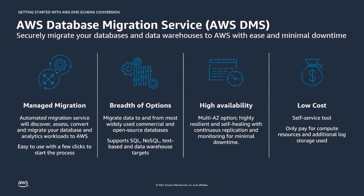DMS focuses on discovering and assessing a fleet of databases, and then subsequently converting and migrating them to AWS, all with minimal downtime and zero data loss. DMS supports a wide variety of sources, both relational and non-relational, and supports an even wider variety of targets. When you're migrating with DMS, you can keep your application running during the migration, since DMS provides continuous replication by leveraging the source database's underlying change data capture or redo log type of technology.